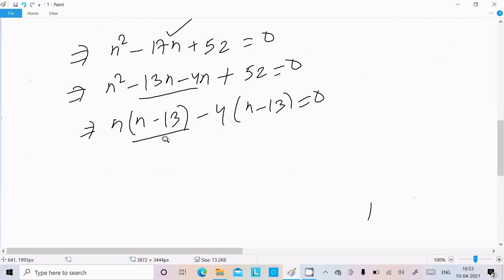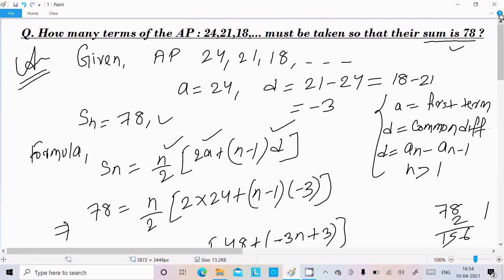So n minus 13 equals 0 or n minus 4 equals 0. Therefore, n equals 13 or n equals 4 is the answer.